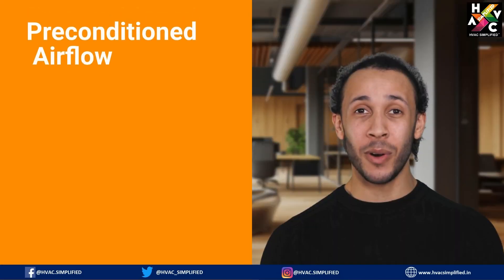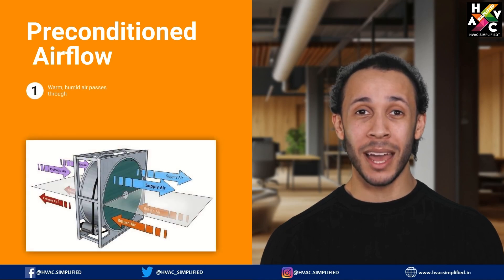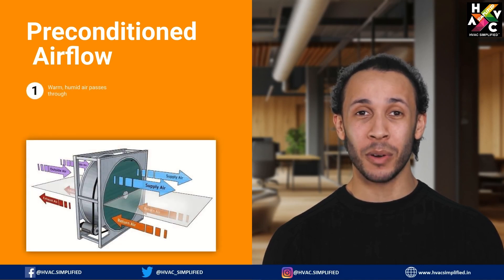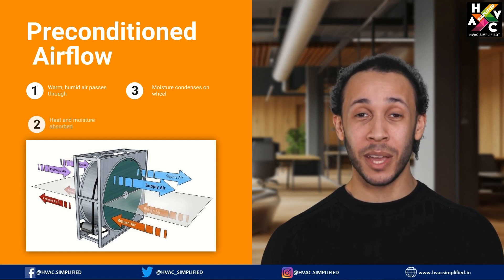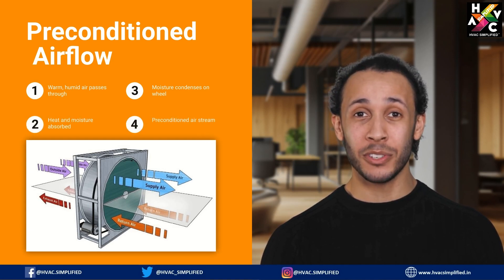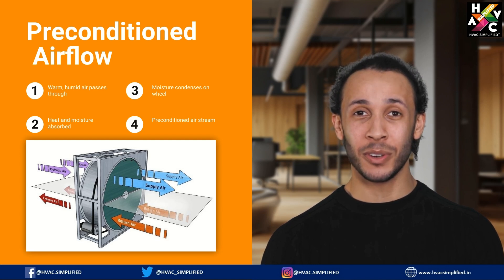Here's how it works. Warm, humid air from the exhaust passes through the wheel, where moisture condenses. The wheel absorbs heat and moisture, releasing it into the incoming fresh air stream, preconditioning it for easier cooling or dehumidification.